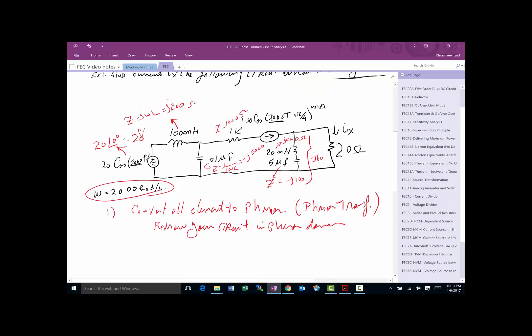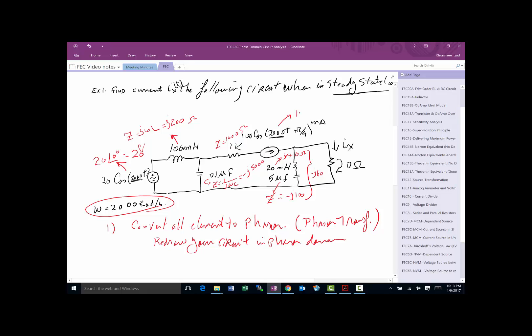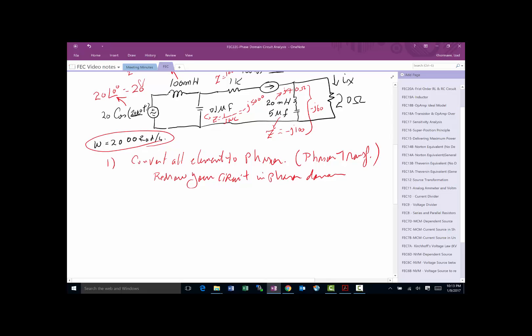I just noticed that I forgot to convert this current source. This is basically going to be 100 angle pi over 4, and if I write this in rectangular form it's going to be 100 times cosine of pi over 4 which is 70.7 plus j times sine of pi over 4 which is 70.7. Now let's redraw the circuit now that we've done the conversion.